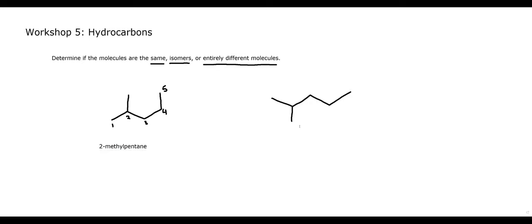Going to the other molecule, we have one, two, three, four, five — numbering closer to where the substituents are, because we want to give them the lowest number possible — with a methyl group on the second carbon. That's also 2-methylpentane. We have the exact same molecule but drawn differently.